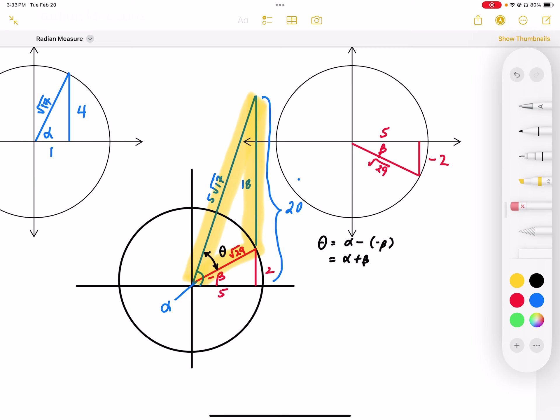So we're going to call that negative beta. And we can see that the difference between those two angles, the red triangle and the blue triangle, the difference in those angles is going to be theta. So we have theta equals alpha minus negative beta, which is really the same as alpha plus beta. So that angle theta now represents angle alpha plus beta.